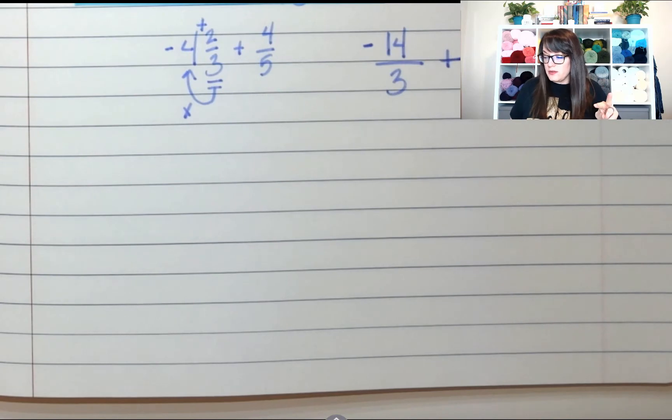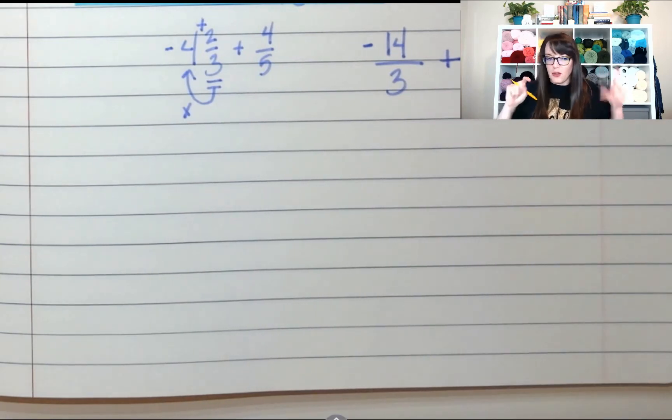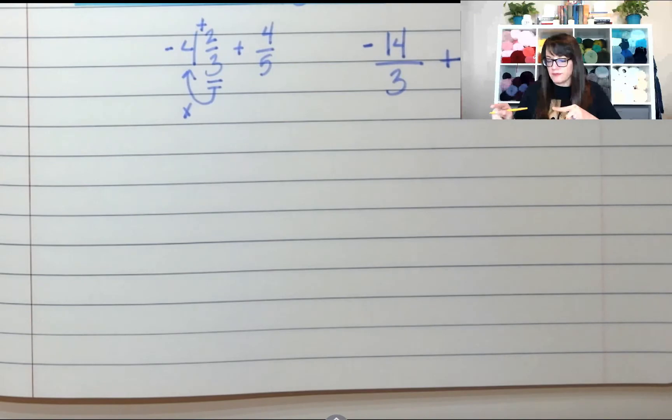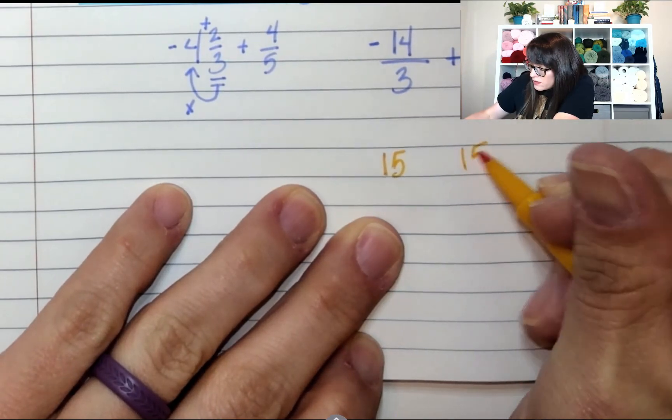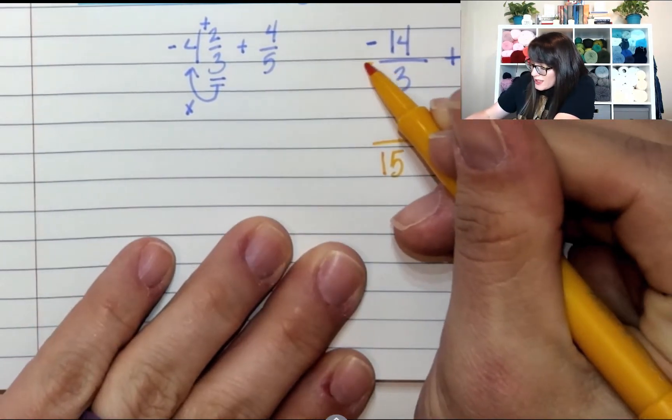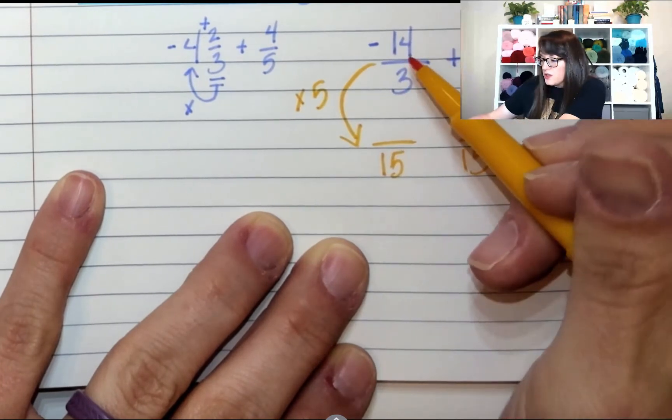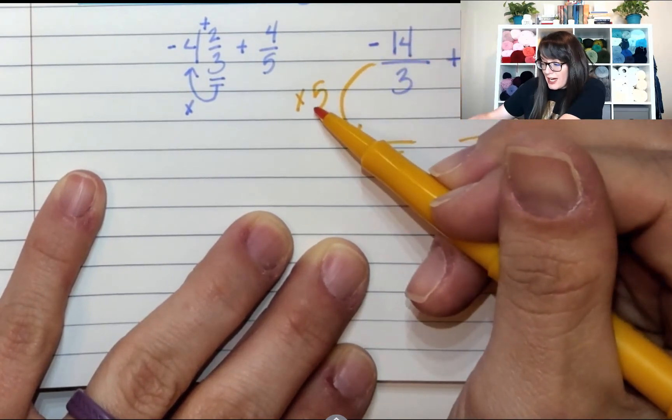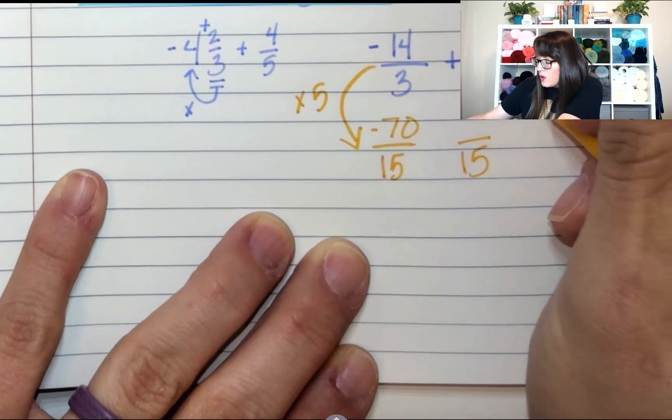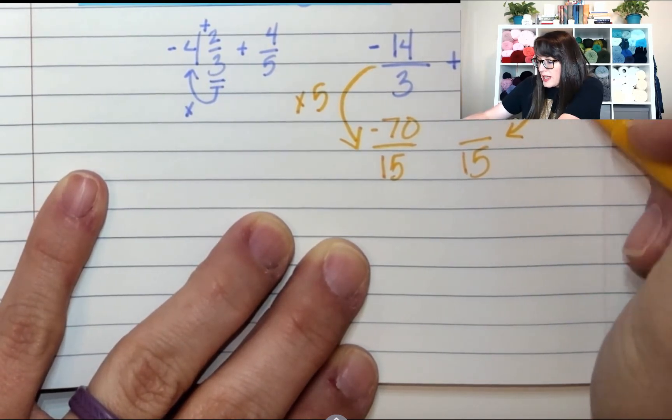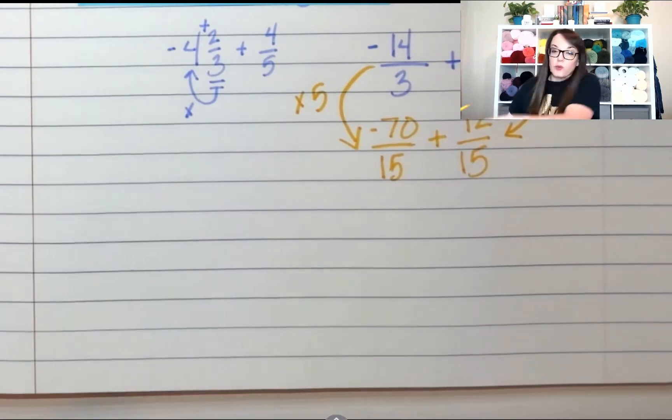All right. Step two. What was step two? We need a common denominator. I have three and five. What number can three and five go to? The smallest one is 15. So, what did you have to put three through to get to a 15? We'd have to put it through a times five portal. So, 14 times five is 70. And it's still negative. And over here, what did you have to do to the five to get to 15? It was times three. So, four times three is 12. And we're still adding.